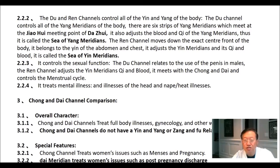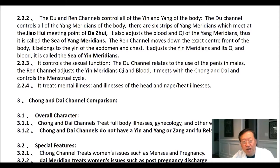The ren channel moves down the exact center front of the body. It belongs to the yin of the abdomen and chest. It adjusts the yin meridians, and its qi and blood is called the xi of yin meridians. It controls sexual function. The du channel relates to the use of the penis in males, and the ren channel adjusts the yin meridians, qi, and blood. It meets with the chong and dai and controls the menstrual cycle. It treats mental illness, illnesses of the head and nape, and heat illnesses.